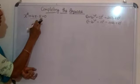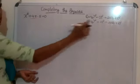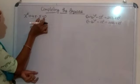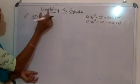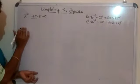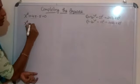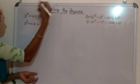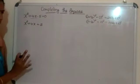Looking at our equation x² + 4x - 5, we need to rearrange it. Take all the x terms to the left side and move the constant to the right side. So x² + 4x = 5. When -5 moves to the right side, it becomes +5.